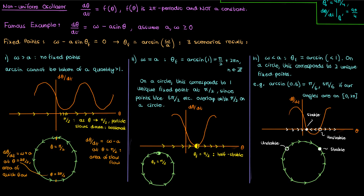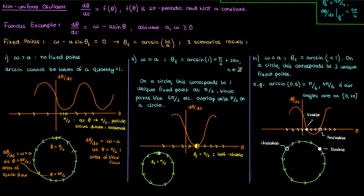That should do it for this video. I've explained flows on a circle and how to construct circular phase portraits to analyze these dynamical systems. If ω and a were negative, you can repeat this analysis with negative values — I'll leave that as an exercise, as it's fairly similar to what we've already shown. Thanks to my patrons for their support, and if you enjoyed this video, feel free to like and subscribe. This is the Faculty of Khan signing out.